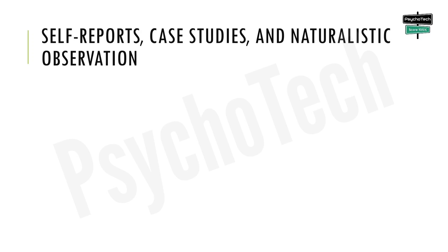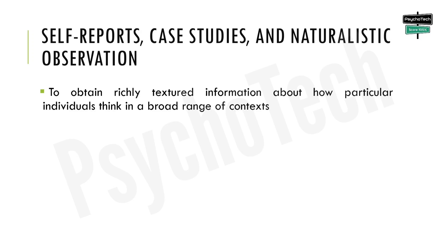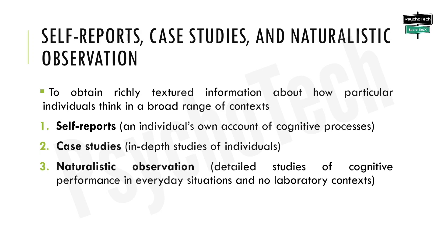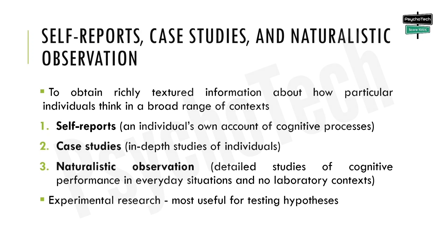The next research methods include self-reports, case studies, and naturalistic observation. Individual experiments and psychobiological studies often focus on precise specification of distinct aspects of cognition across individuals. To obtain richly textured information about how particular individuals think across a broad range of contexts, researchers may use self-reports, case studies involving in-depth studies of individuals, and naturalistic observations, which are detailed studies of cognitive performance in everyday situations outside a laboratory context.